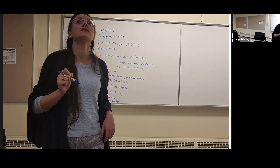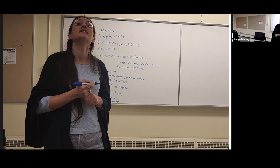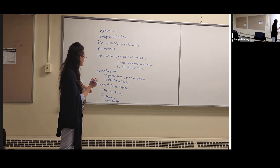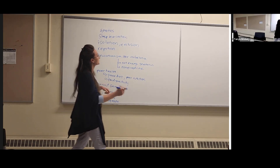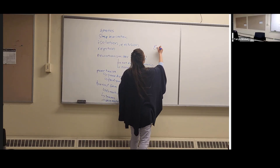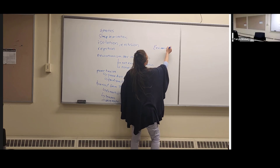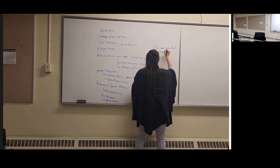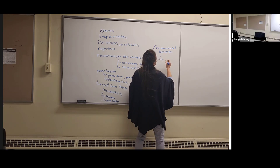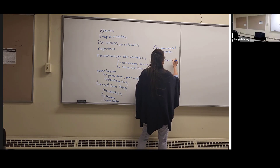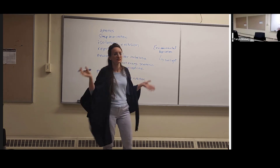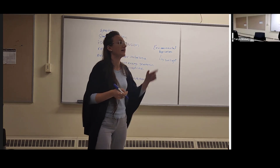Seasonal affective disorder tends to do something different. If you have something to do with the environment — sort of environmental deprivation — something to do with sunlight. Sunlight releases endorphins and makes us feel happy.